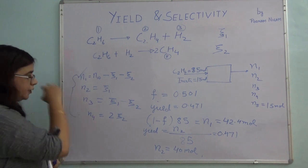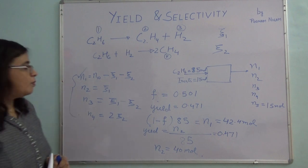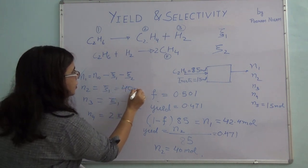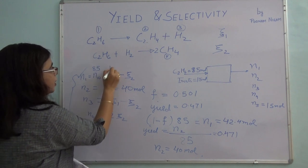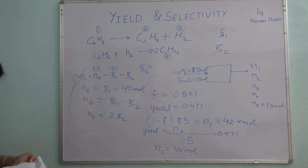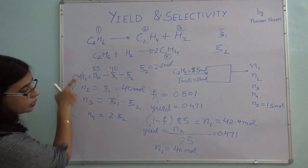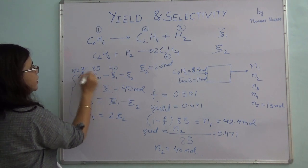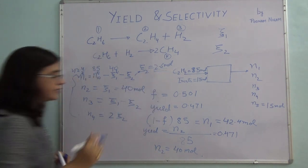Now we have two values: N₁ = 42.4 and N₂ = 40. From N₂ = ζ₁, we get ζ₁ = 40 moles directly. Putting ζ₁ = 40 into the N₁ equation: 85 − 40 − ζ₂ = 42.4, so ζ₂ comes out to be 2.6 moles. Now I have both ζ₁ and ζ₂.